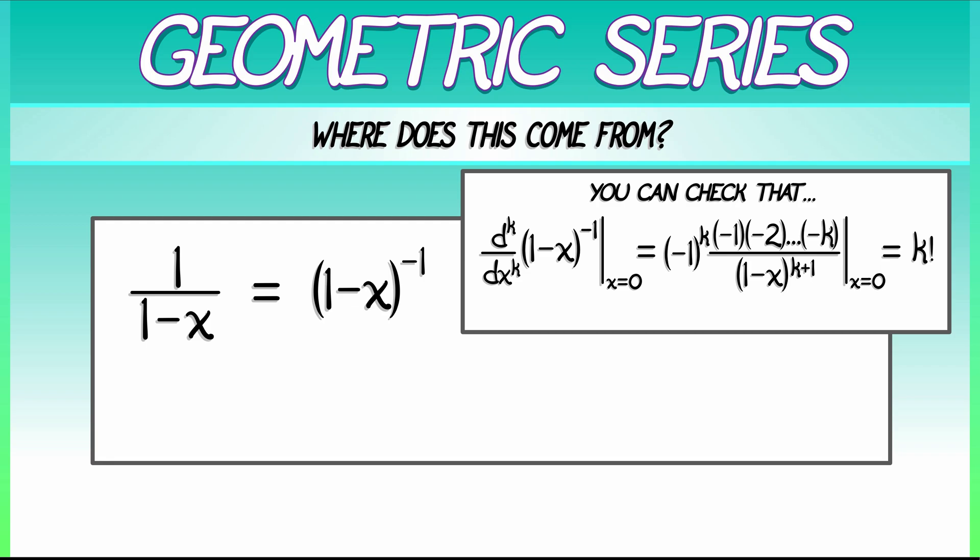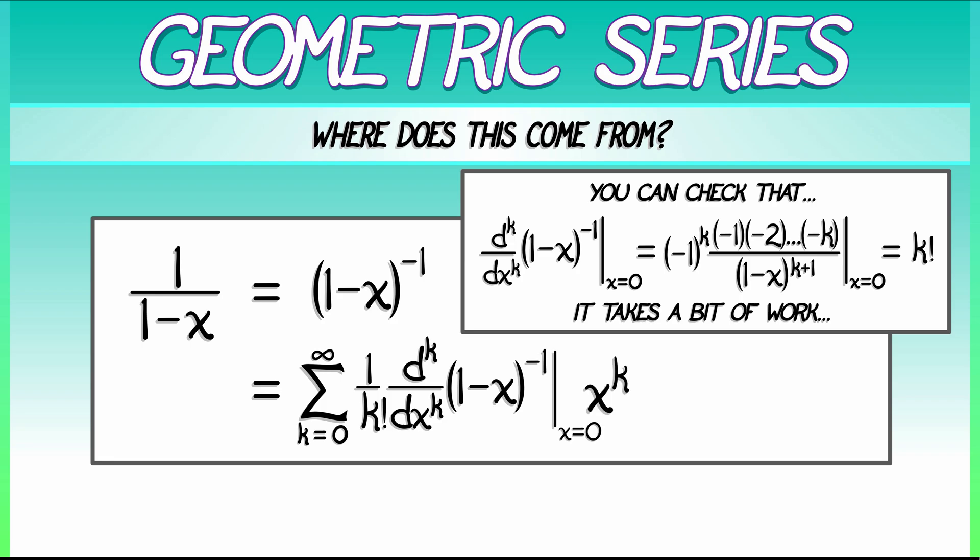Now, to do this rigorously, it takes a little bit of work, a little bit of induction. I'll let you do that, but if we now consider this function 1 over 1 minus x as the sum k goes from zero to infinity of 1 over k factorial times the kth derivative evaluated at zero times x to the k. Then what do we get?